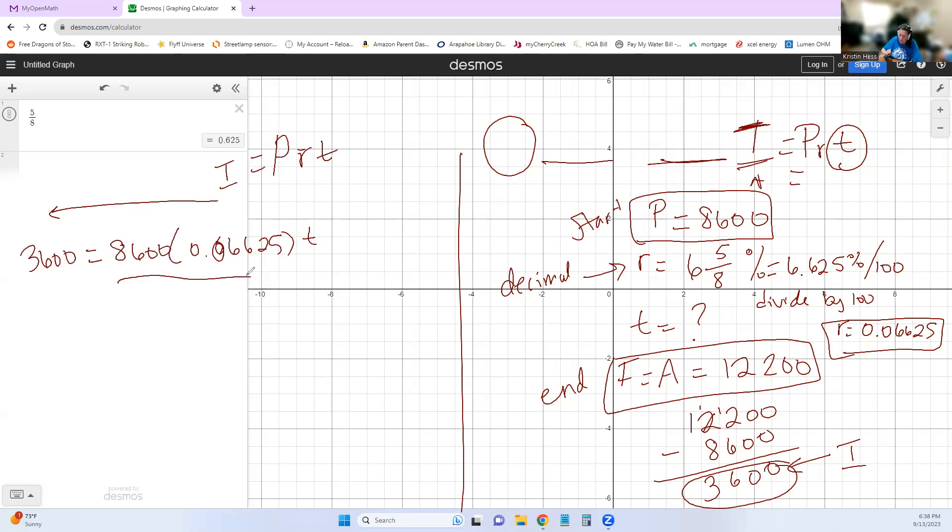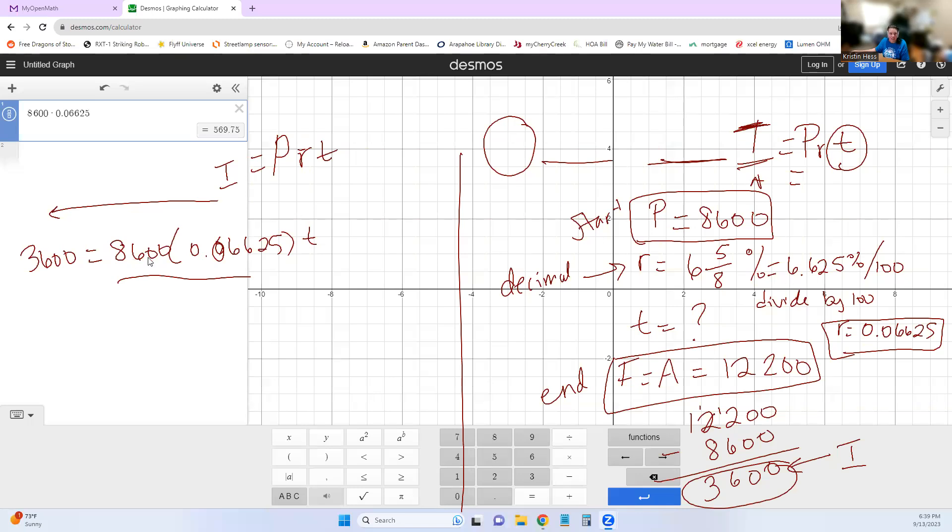So I'm going to start by multiplying those two together. And so I'm going to pull out my handy-dandy calculator in Desmos. So I'm going to multiply 8,600 by 0.06625 to get 569.75. So I'm going to write that down. 3,600 is equal to 569.75 T.